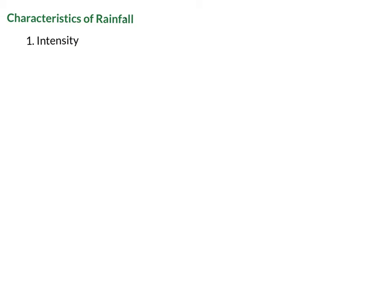So the first characteristic is intensity, and I'm going to define this a little bit more in a minute. The intensity is the rate at which the rainfall occurs, and it's also considered the depth of rain over a specified time interval. We'll talk about that in a little bit.